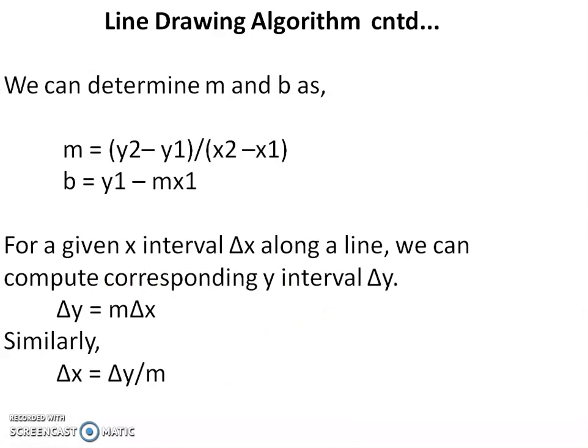We can determine m and b as m = (y2-y1)/(x2-x1) and b = y1 - mx1. From the equation y = mx + b, we can calculate b as b = y1 - mx1. For a given x interval Δx along a line, we can compute corresponding y interval Δy. So Δy = mΔx. Similarly, Δx = Δy/m.